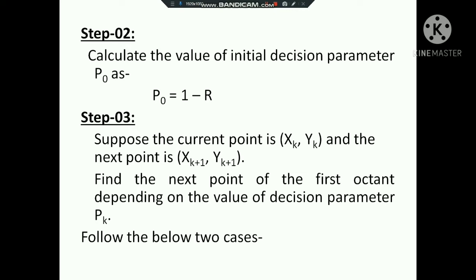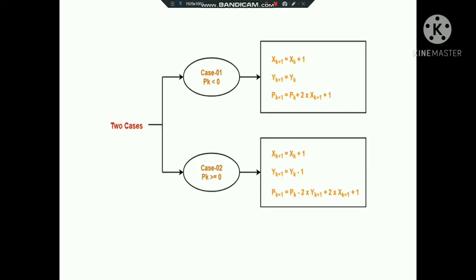The value of the decision parameter can be less than 0 or greater than 0. If pk is less than 0, then xk+1 = xk + 1 and yk+1 = yk. The next plot point is (xk+1, yk). Then pk+1 = pk + 2*xk+1 + 1.